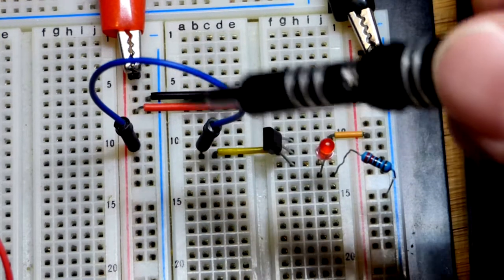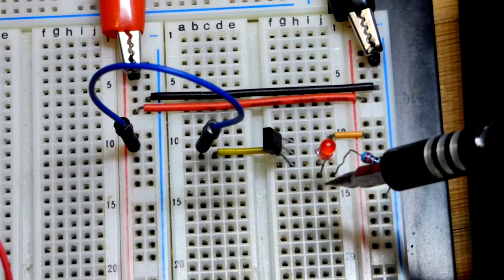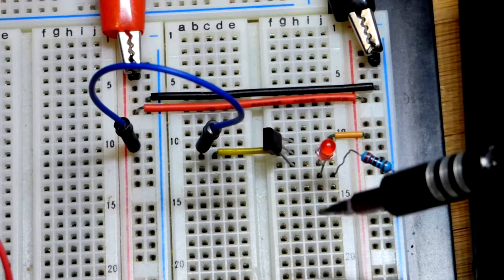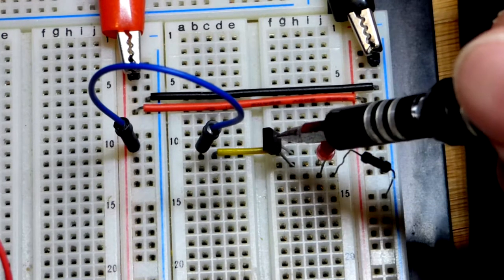The gate is where we get our signal. Up here is the source and down here is the drain. Again, it's facing the opposite way of the N-channel MOSFET when it comes to the pins.